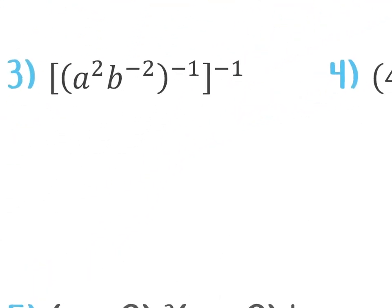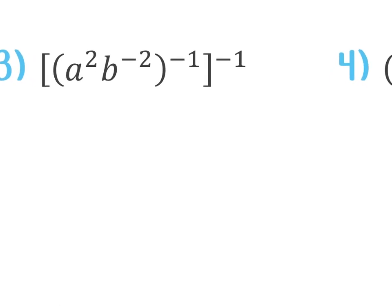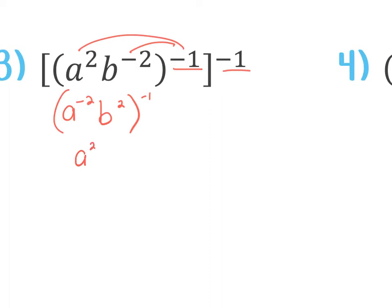Number three — lots of stuff going on here. You've got this negative that's going to get distributed in, then you've got this negative that's going to get distributed in again. So you can do them in either order. The negative on the inside is a to the negative 2, b to the negative 2 raised to the negative 1 — it means I'm going to multiply those exponents, so it becomes squared, all raised to the negative 1. Distribute that negative 1 in, multiplying it onto the exponents, and I get a to the positive 2, b to the negative 2.